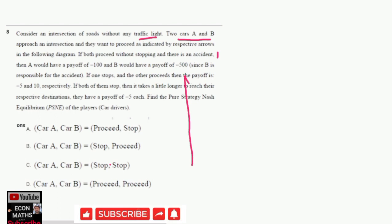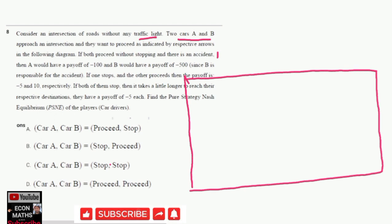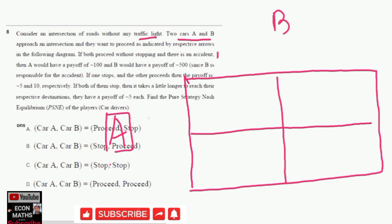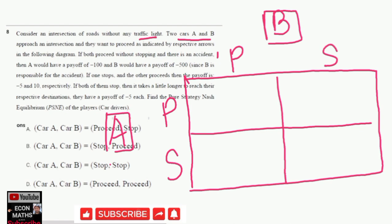I will first draw the payoff matrix to make things clear. We have Car A and Car B. Car A has two choices: either to proceed or to stop. Similarly, Car B has two choices: either to proceed or to stop. If both proceed, Car A has a payoff of minus 100 and Car B has a payoff of minus 500. I will denote proceed by P.